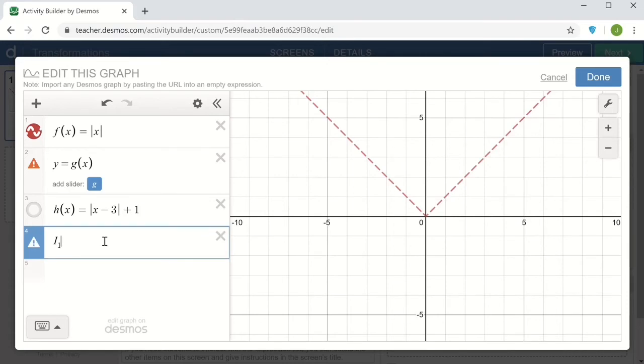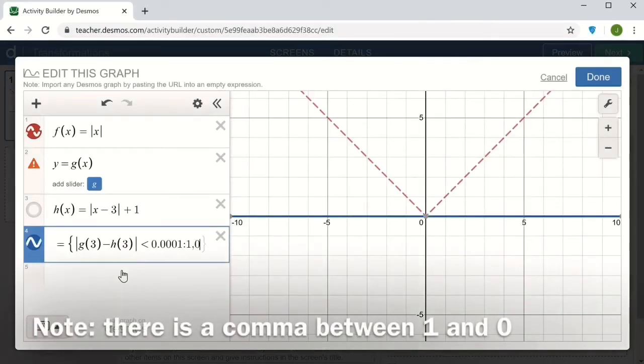i sub 1 equals, and then in braces, I'm going to type the absolute value of g of 3 minus h of 3. So that will compare the value of the two formulas at 3, where the vertex should be. And I want that to be the same essentially, but to give a little bit of a tolerance, I'm going to say it should be less than .0001. And then with a colon, I can assign the value 1 if that statement is true and 0 otherwise.